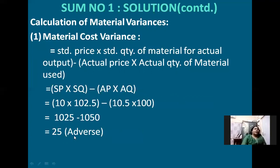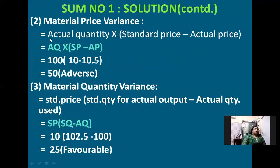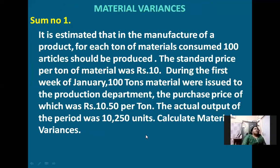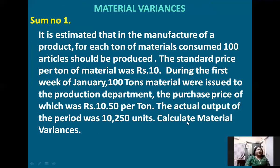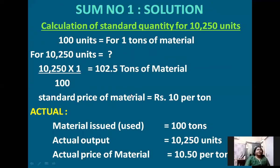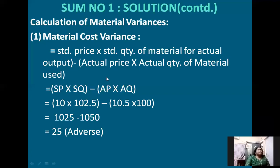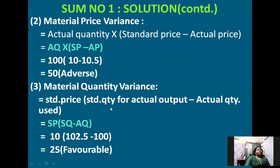Working out as per this formula, we get a negative answer: 1025 minus 1050, giving us a negative answer. That shows an adverse situation — the material cost variance is showing an adverse situation for the company. The question asks to calculate material variances, so we need to work out the material price variance, material cost variance, and material quantity variance — these three answers whenever the question asks to calculate material variances.